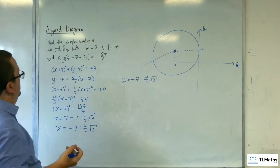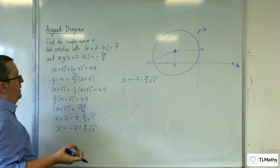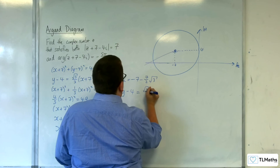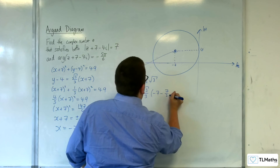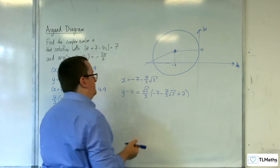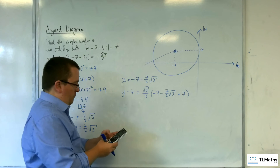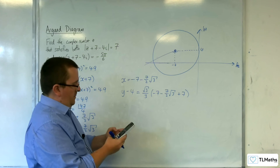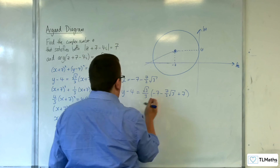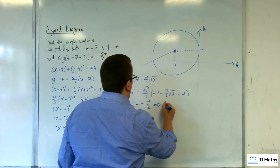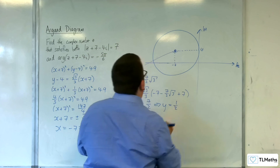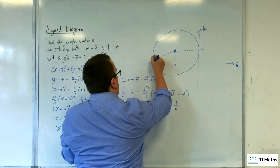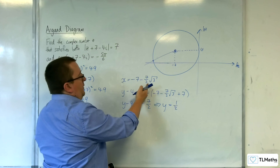Now I need to find the y value by substituting back into the line equation. So y minus 4 equals (√3 over 3) times (minus 7 minus (7/2)√3 plus 7), which gives minus 7 halves. So y minus 4 equals minus 7 halves, and adding 4 gives y equals one half. So it does intersect above the real axis — the coordinate is (−7 − (7/2)√3, 1/2).